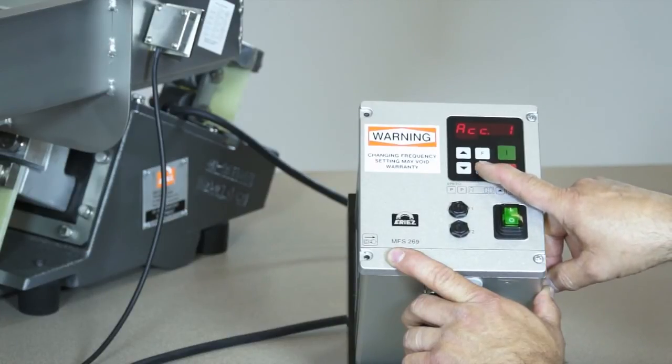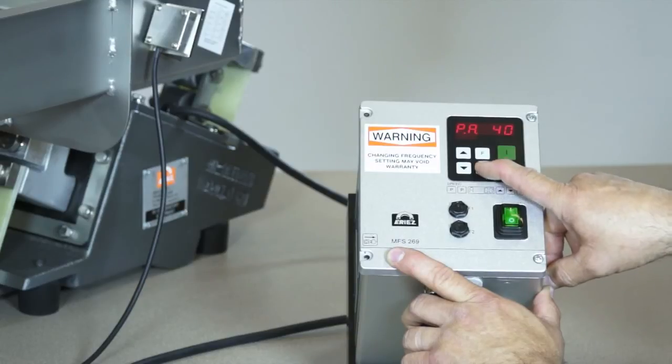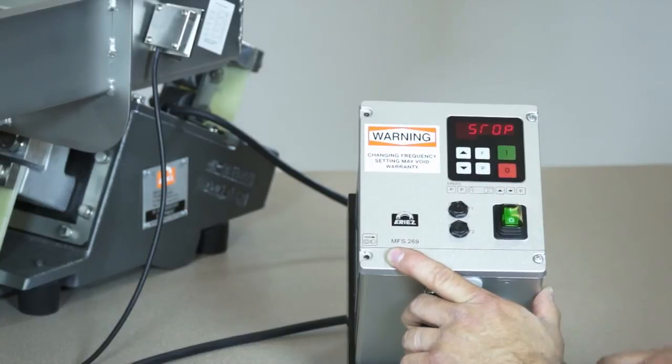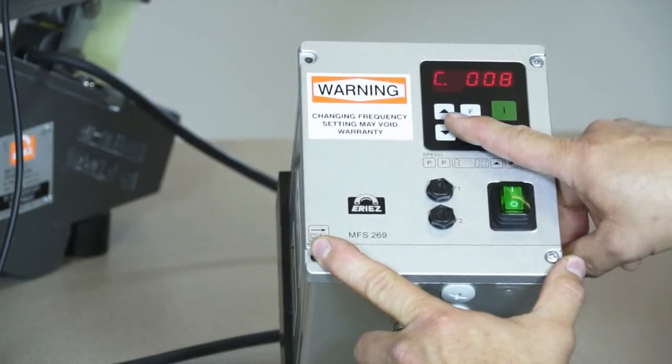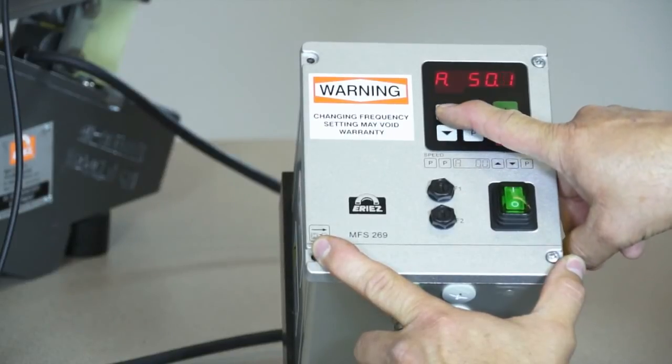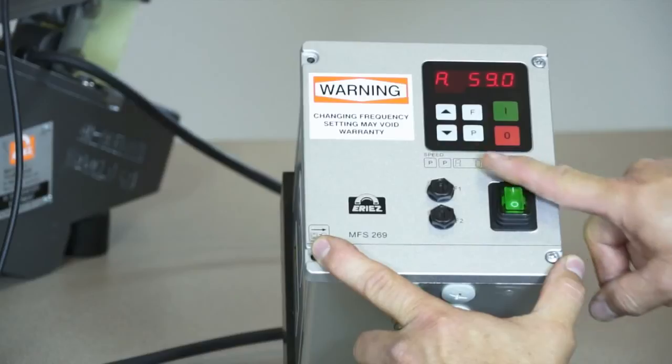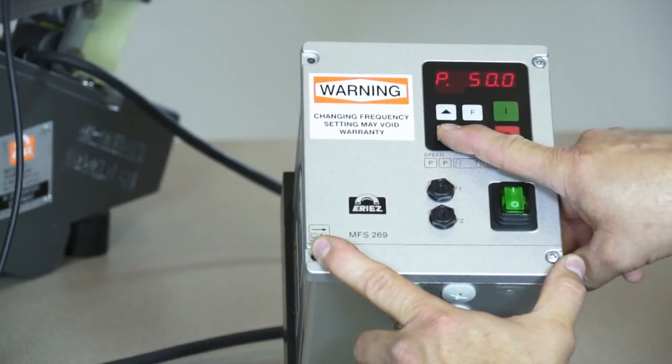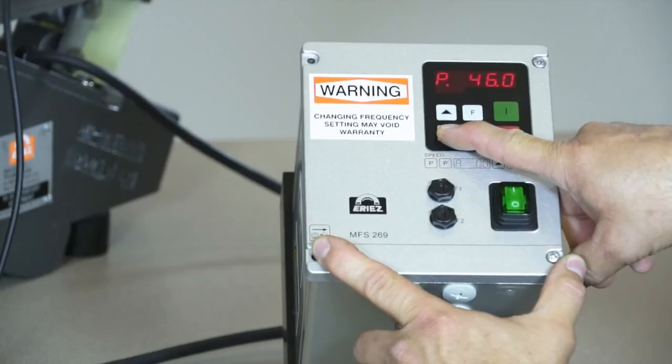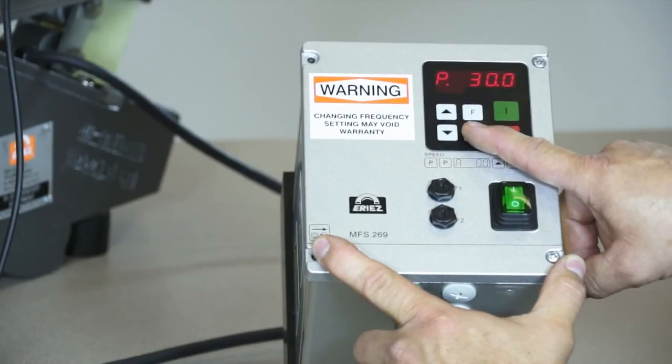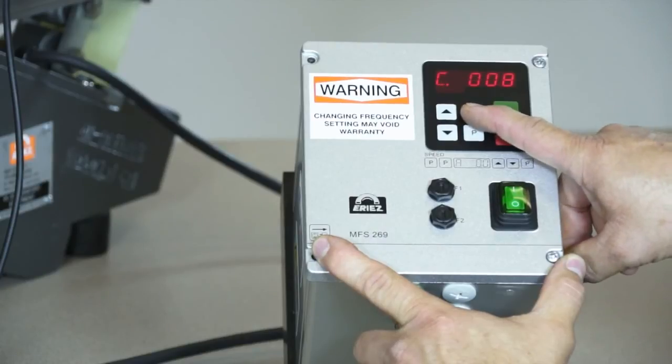Press P until you are at running mode again. Next, start the feeder in code 008. Adjust the power P until you reach the maximum displacement per the feeder nameplate. Then, adjust the amplitude A until you get the desired rate of material flow on the feeder. Now the control will regulate the flow automatically.